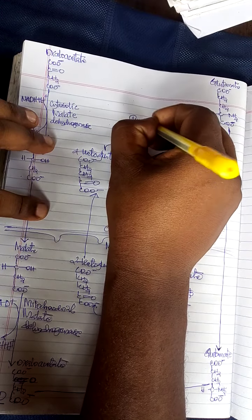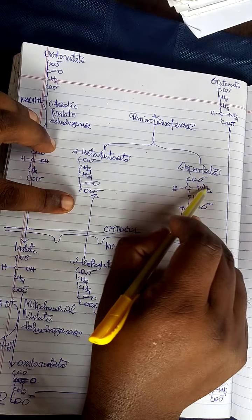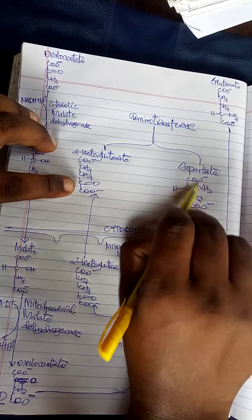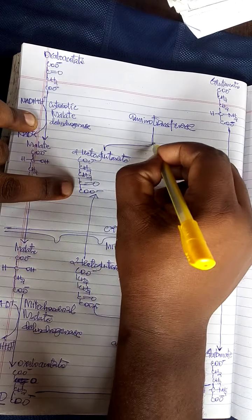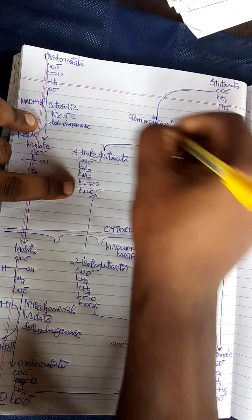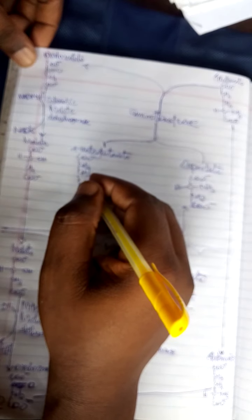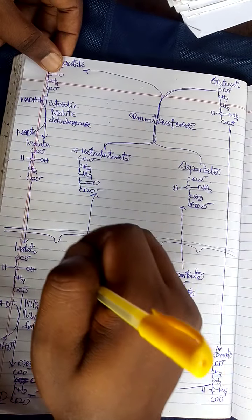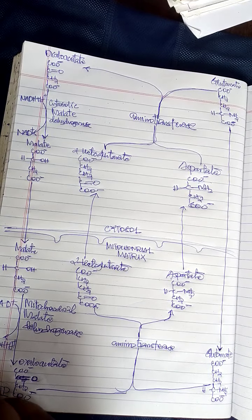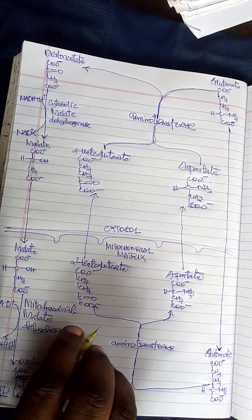The aminotransferase again transfers the amino group from aspartate to alpha-ketoglutarate; the alpha-ketoglutarate becomes glutamate, and aspartate changes back to oxaloacetate, so the cycle keeps recycling. The malate-aspartate shuttle contributes 3 ATP molecules, while the glycerol-3-phosphate shuttle contributes only 2 ATPs. Thank you for listening, make sure that you subscribe.